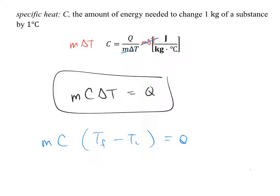This should be a bit of review. The units of Q — units of heat, energy, or work — are always joules. We can see that our C value has very specific units. Q is measured in joules, mass in kilograms, temperature in degrees Celsius. So the units for C are joules per kilogram per degree Celsius. Those units come directly from the definition of C.